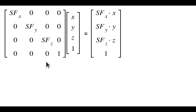In general we get the following matrix — SF is shorthand for scaling factor. If the three scaling factors are identical, this is a uniform scaling matrix, and if they are not identical, this is a non-uniform scaling matrix. Now let's see how we can implement this in code.